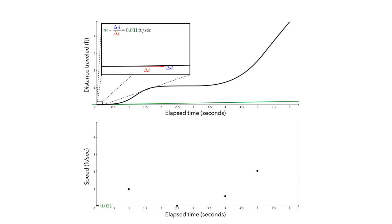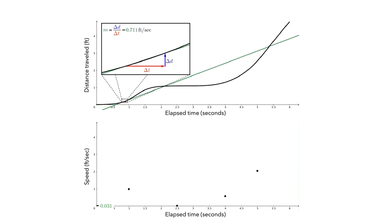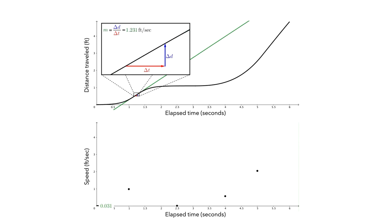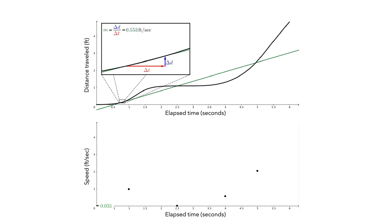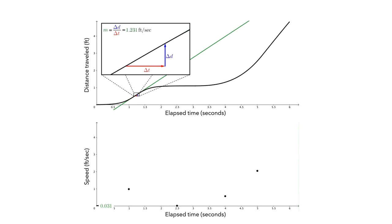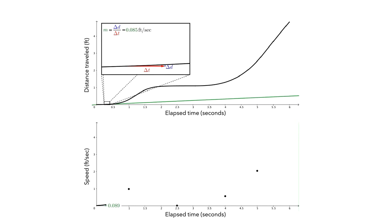Let's look at the first part of the distance graph. Pause the video and make a prediction about what you think the corresponding speed graph might look like. Initially, as we start moving along the time axis, for each tiny delta t, the change in distance gets larger and larger. This ratio between delta d and delta t tells us the slope of the secant line, so this means that the slope of the secant line is increasing. And so the value of the derivative function — the speed — is also increasing. So the graph of the derivative function would look like this.